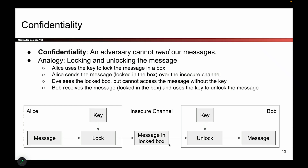Now Alice can send the message across the insecure channel, and any attacker such as Eve is not going to be able to open the box — Eve doesn't have the key. Once Bob receives the box, he uses an unlock operation with his secret key to unlock the box and reveal the message inside. All the secrecy comes from the keys.